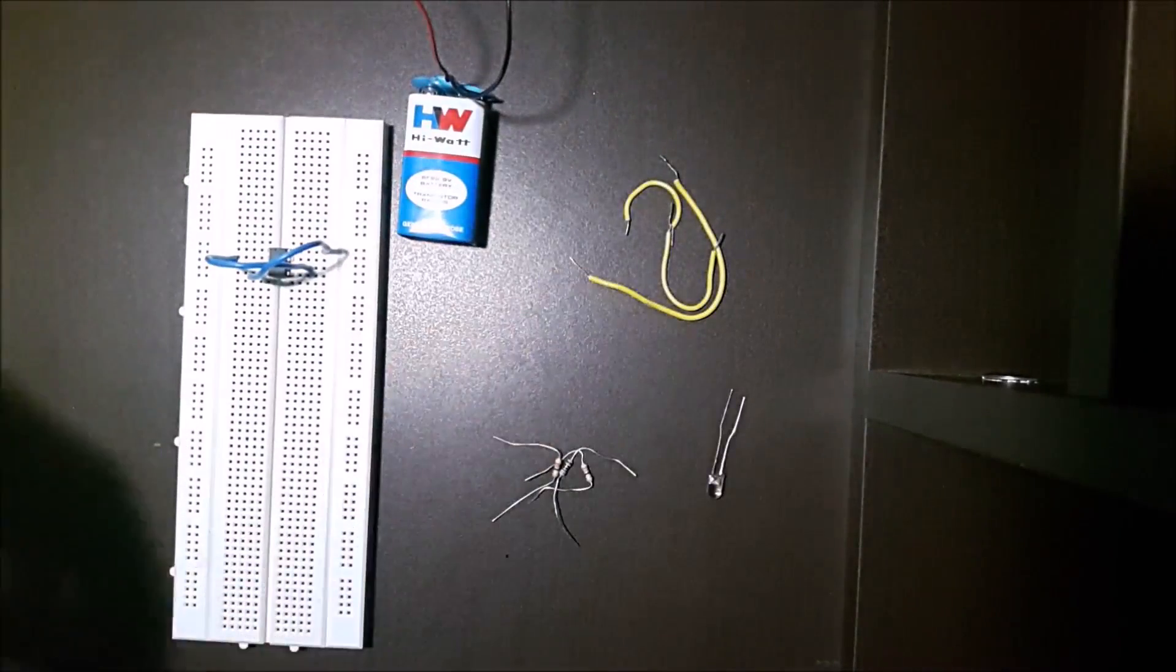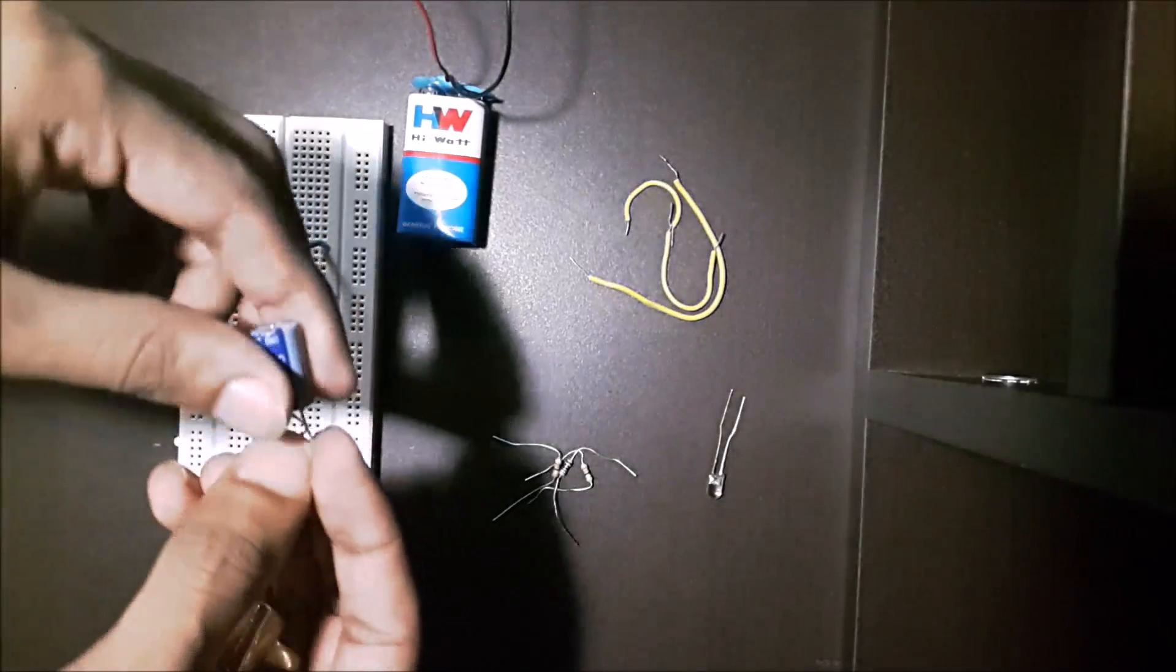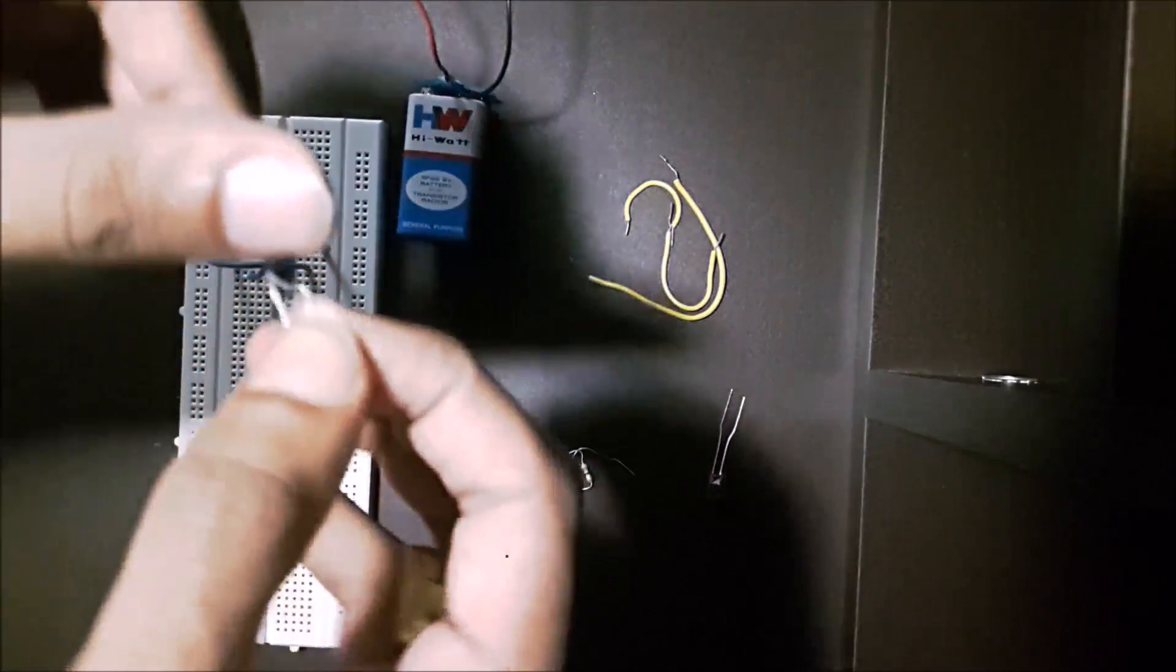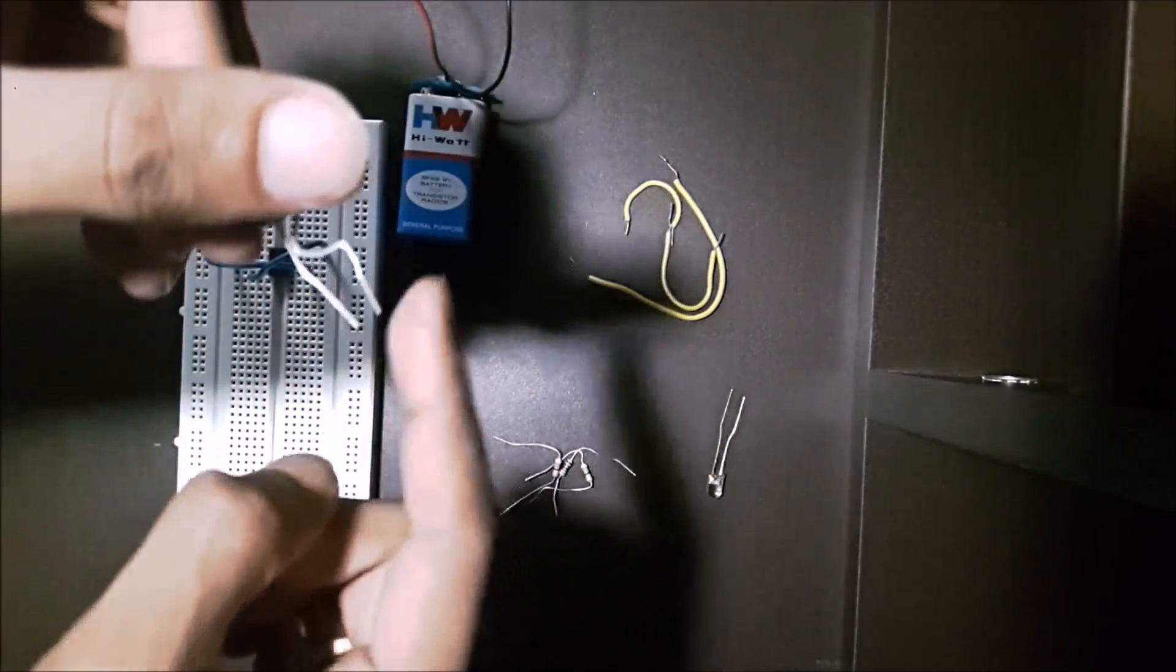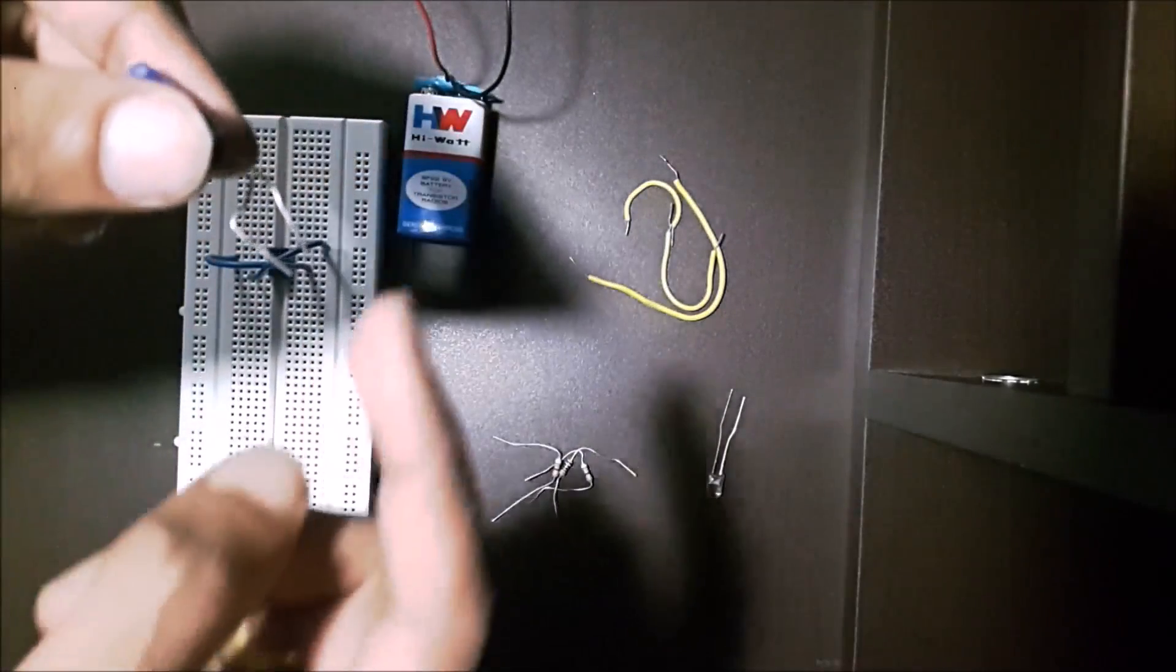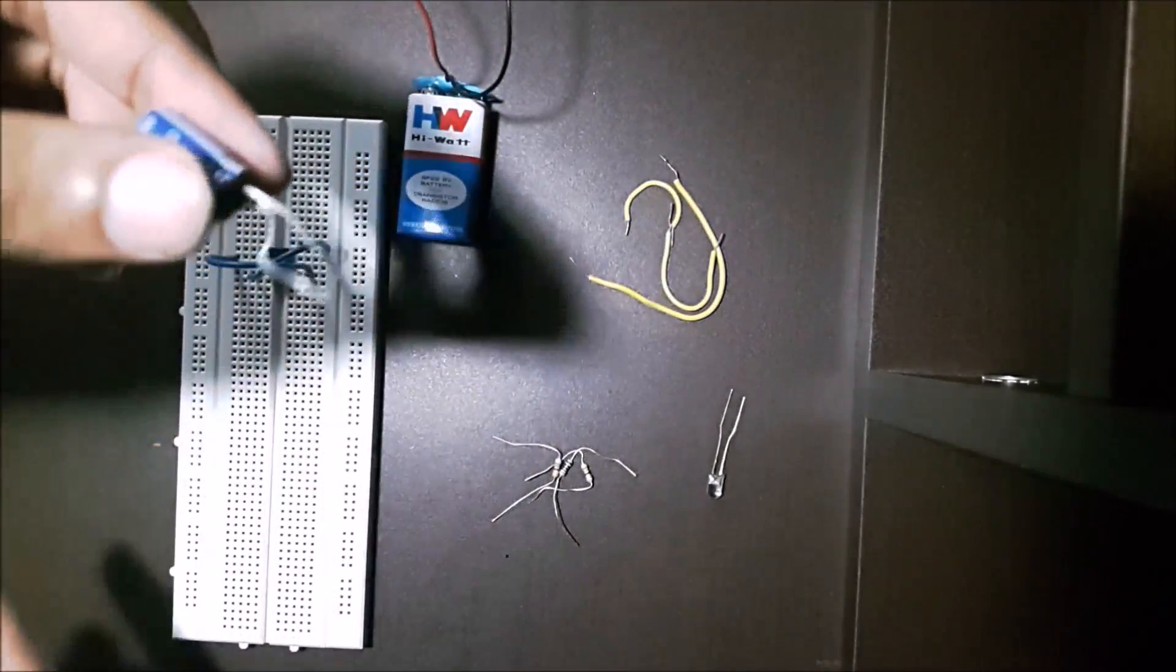Now connect the capacitor between pin 1 and pin 2. The long leg, this leg, will be connected to pin 2 and the shorter leg will be connected to pin 1.